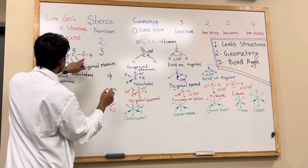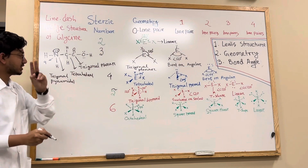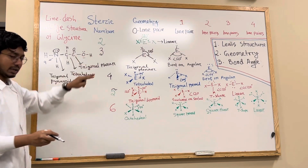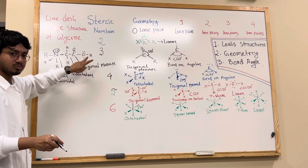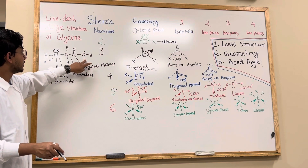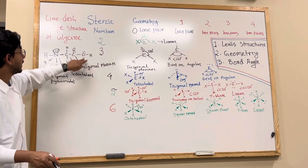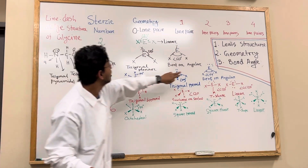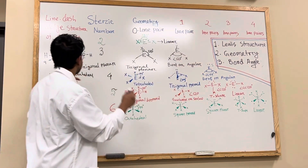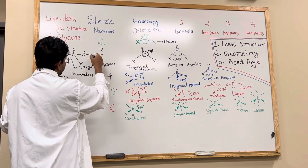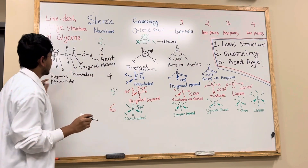Then for oxygen, which has 2 lone pairs — that means 2 from lone pairs and 2 from single bonds — giving steric number 4. With steric number 4 and 2 lone pairs, the geometry will be bent. So I get a bent structure here.